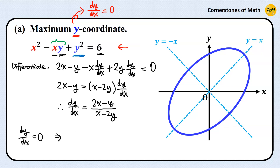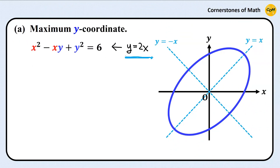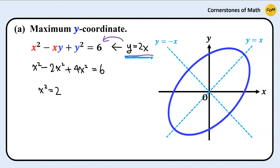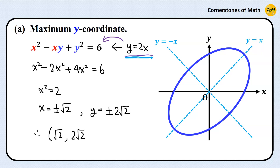Therefore, dy over dx equals 2x minus y divided by x minus 2y. Therefore, when dy over dx equals 0, we have y equals 2x. Substituting this relation into the equation of the ellipse, we have x squared minus 2x squared plus 4x squared equals 6, which gives x squared equals 2. So, x equals plus or minus square root of 2. And from y equals 2x, we have y equals plus or minus 2 square root of 2. Therefore, the point with maximum y-coordinate is (square root of 2, 2 square root of 2).